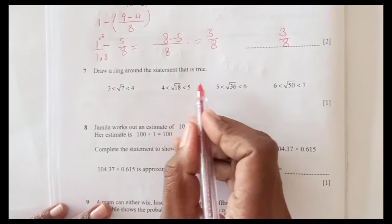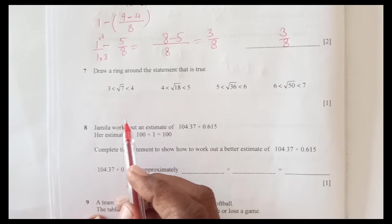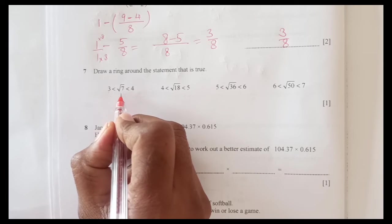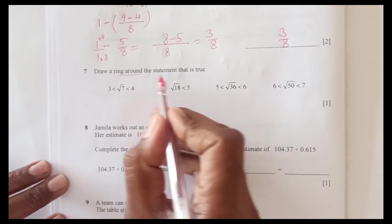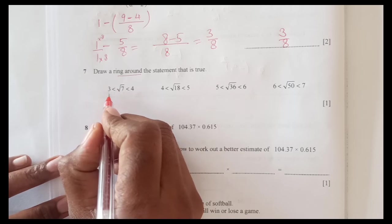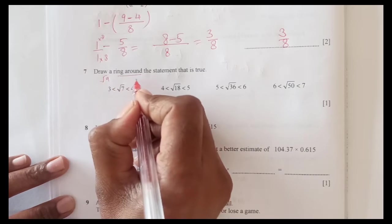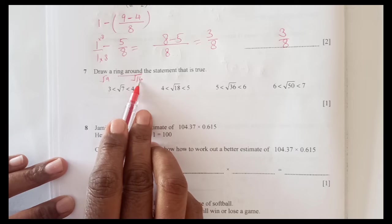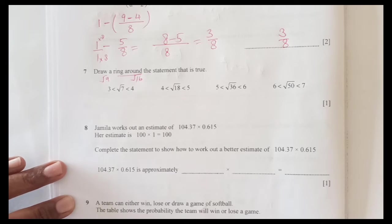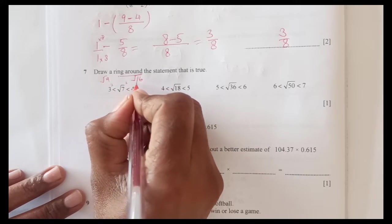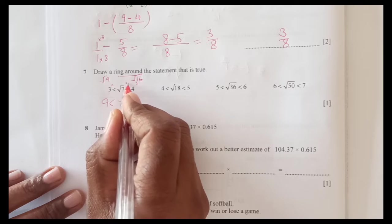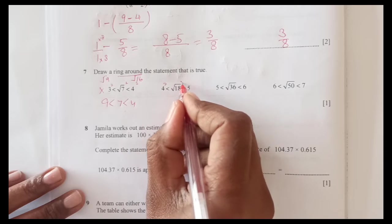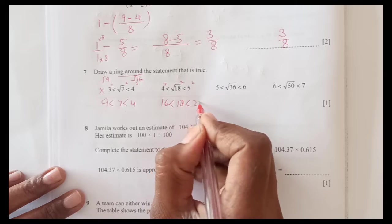Draw a ring around the statement that is true. You do not need actual calculations because this is paper 1 and you will not have calculator. Here 3 and 4, and square root 7 is in between somewhere. If I make it a square, this 3 is square root of 9, this 4 is square root of 16. It is in the middle 9 and 16. This one is less and this one is negative. Or the other way we can make the square root square of both. This will become 9 less than 7 because this square root will cancel the square and 4. 9 is less than 7, so this is not the one we are looking for, this is not true.